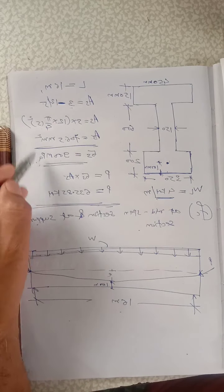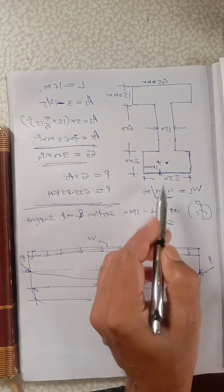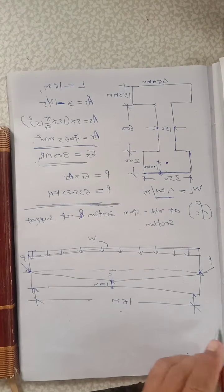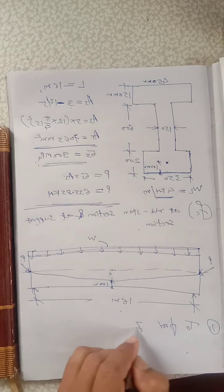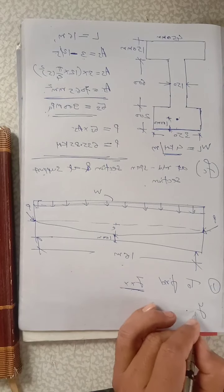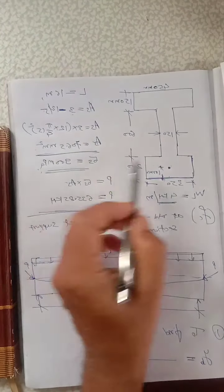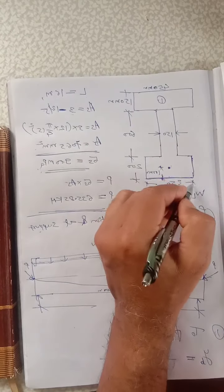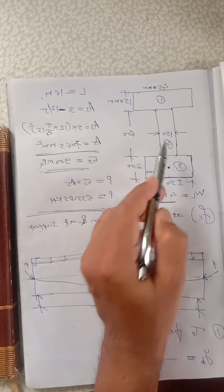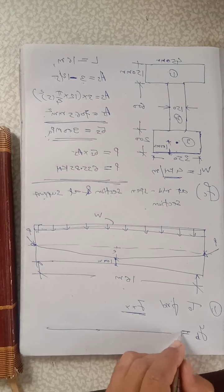The I-section is unsymmetrical: top flange 450 × 150, bottom flange 350 × 200, and web 150 × 600. Step 1 is to find I_xx. First we find Y_B (distance from bottom to CG). The I-section is divided into three parts: top flange (1), web (2), and bottom flange (3). Y_B = (A₁Y₁ + A₂Y₂ + A₃Y₃) / (A₁ + A₂ + A₃).